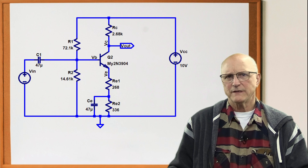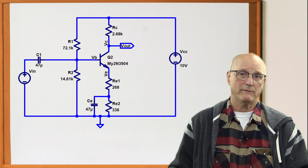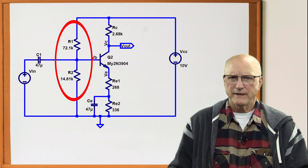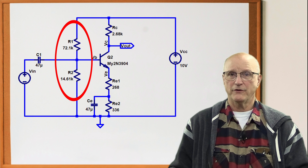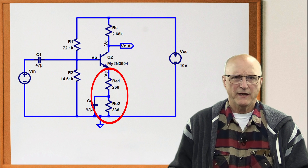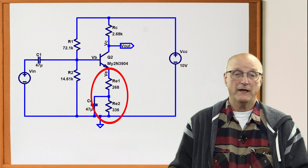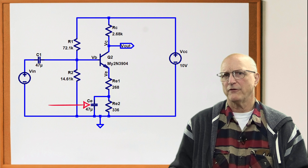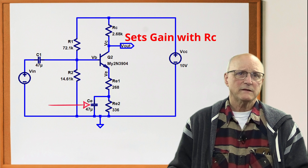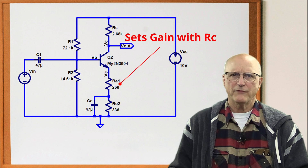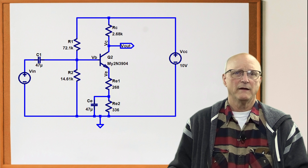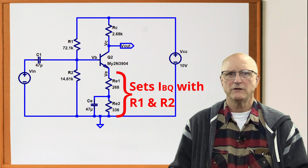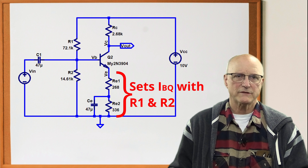What we're looking at here is a very common beta stabilized common emitter circuit. We have the voltage divider bias set up in the base circuit with R1 and R2. We also have a split emitter resistor RE1 and RE2. I've put a bypass capacitor across the bottom resistor RE2. The top resistor RE1 gives us direct control over the gain. The top and bottom resistors work together with the base bias resistors to establish the quiescent operating point of the circuit.